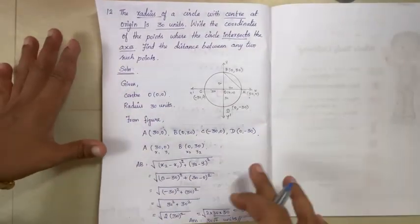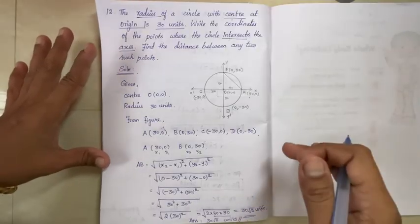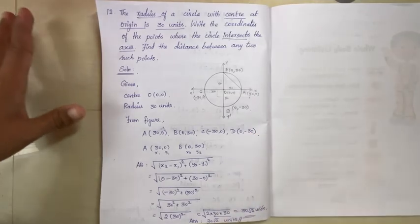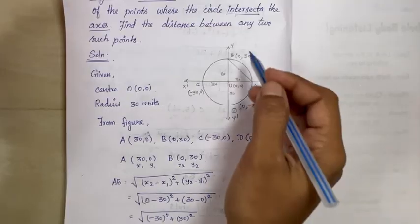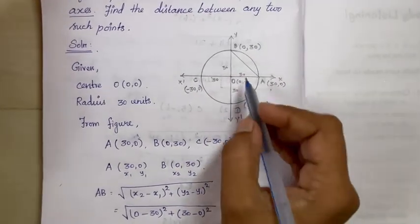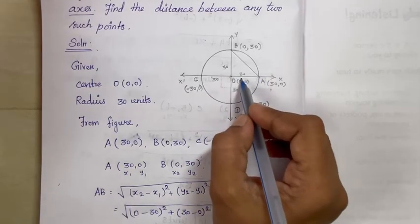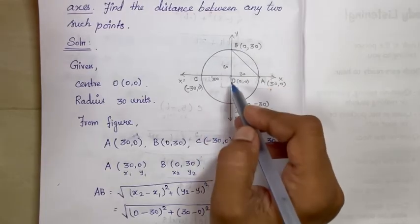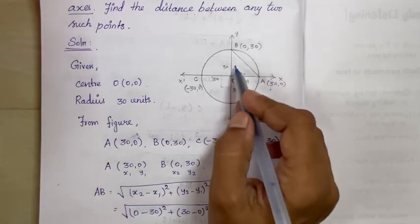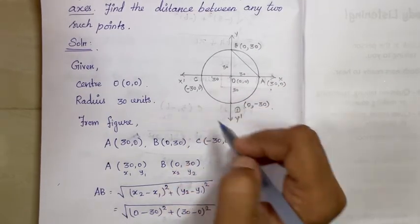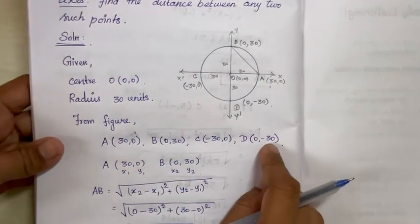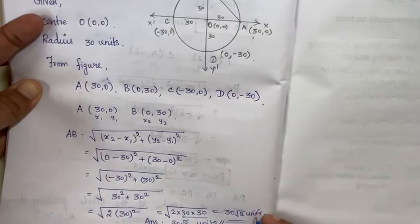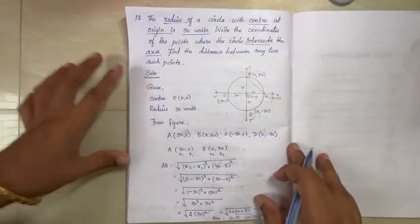So the answer: the circle with center at origin and radius 30 intersects the axes at four coordinates. The distance between any two adjacent points, such as AB, is 30√2 units. This completes Exercise 5.2.